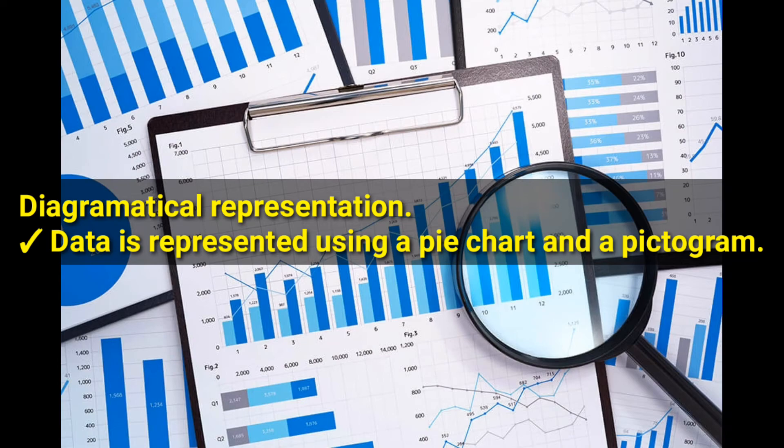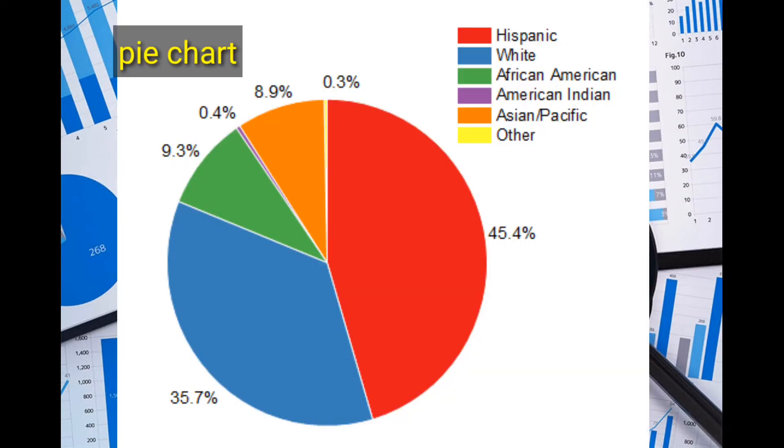This is how a pie chart looks like—it's in a circular form with many sections. This graph was showing African-American, American Indian, Asians, and others. That's how a pie chart looks: circular form divided into sections.